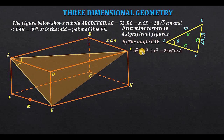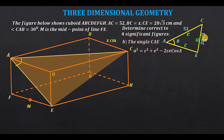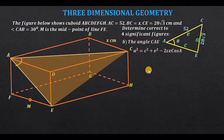The cosine rule states: a² = c² + e² − 2ce·cos(A). We have expressed it this way because we want to find angle A. However, we cannot apply this formula yet because we do not know the value of c (AE) or a, so we have two unknowns. We must determine c first.